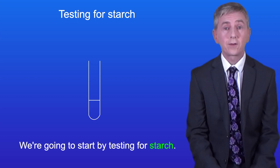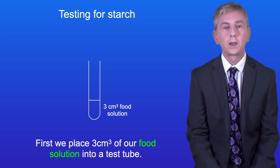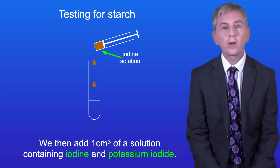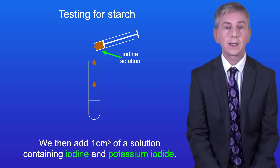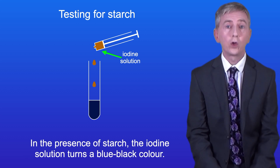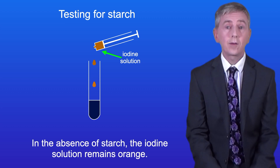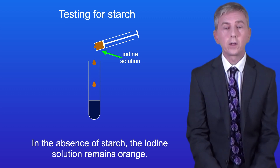We're going to start by testing for starch. First we place 3 cm³ of our food solution into a test tube. We then add 1 cm³ of a solution containing iodine and potassium iodide. In the presence of starch the iodine solution turns a blue-black color. In the absence of starch the iodine solution remains orange.